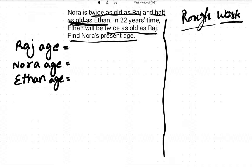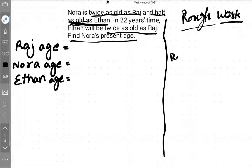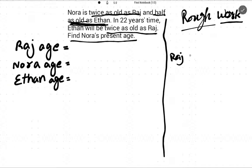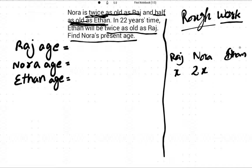Okay, so first of all we will set up the ages roughly. Let Raj's age be x. So Noora's age is twice Raj's age, meaning Noora is 2x. Now, Noora is also half as old as Athan — this is the tricky part. So if Noora is 2x, then Athan should be 4x.